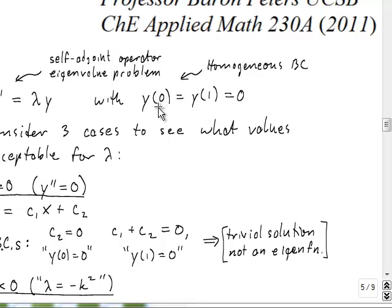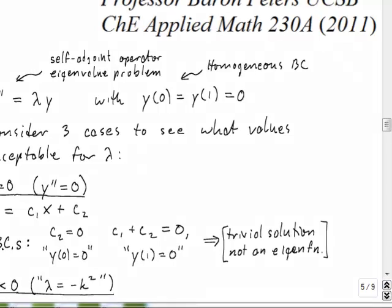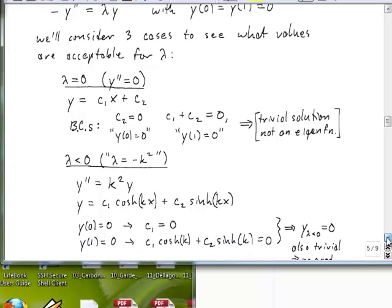And we're going to impose on the solutions that they have to have homogeneous boundary conditions obeyed. So we have Y of 0 is equal to 0, and also Y at 1 is equal to 0. So 0 and 1 are our A and B in the previous page of notes. And now what we're going to do is consider three cases and see what values are going to be acceptable for the eigenvalue in this equation, lambda.